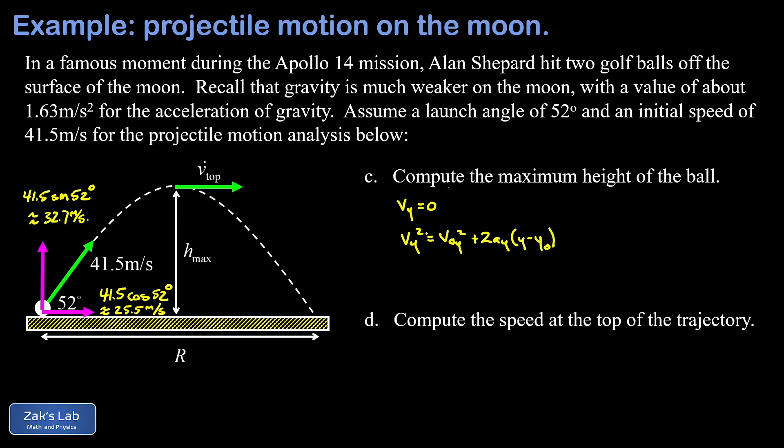V_y squared is V naught y squared plus two a_y times y minus y naught. We're going to sub everything in. Our final y velocity is zero. Our initial y coordinate is zero. And we still have to sub in the acceleration caused by gravity. So we end up with zero equals my initial y velocity squared, so 32.7 squared.